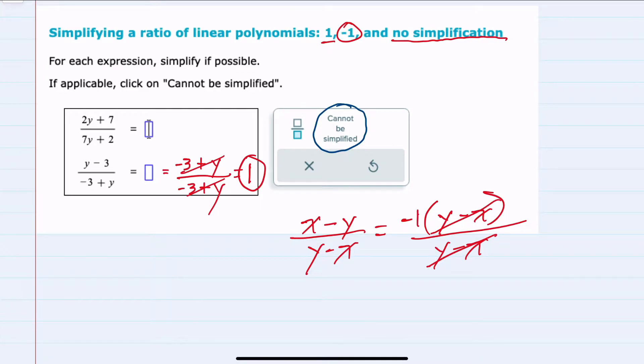the y minus x and y minus x. Factoring out a negative 1 is a nice way of changing the order of subtraction. Cancelling those y minus x's would then give me a minus 1.